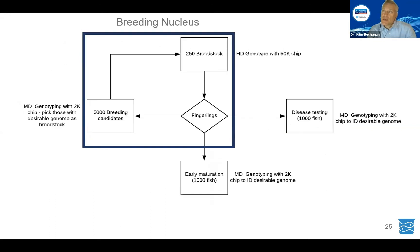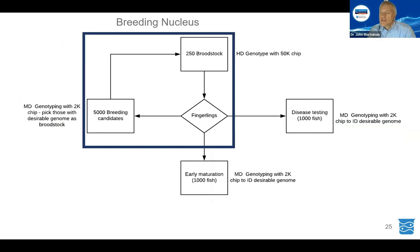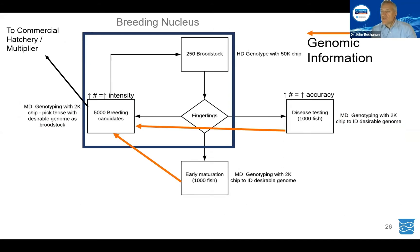Another application that has been proven quite extensively in aquaculture is genomic selection. Rather than looking for specific markers, you build a model of the entire genome. If you have a breeding population in a nucleus and you send fish or shrimp out for disease testing or other phenotype collection, rather than bringing those fish back into the nucleus, you can genotype them and bring the genomic information back to select your breeding candidates. In this way, you can maintain the biosecurity of your breeding nucleus, and this is also a more accurate method for selecting future broodstock, increasing the rate of genetic gain per generation.